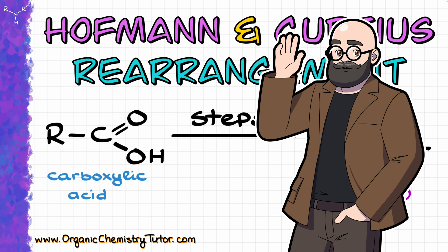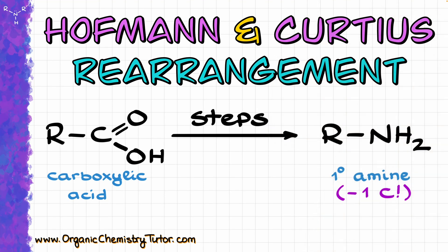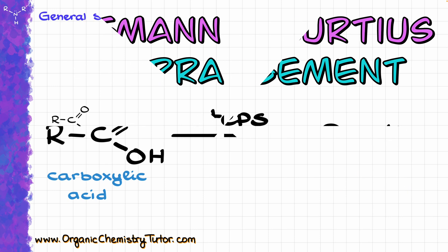Hey everyone, Victor here, your organic chemistry tutor. In this video I want to talk about Hofmann and Curtius rearrangements, which is a very old and yet useful method of taking carboxylic acids and converting them into primary amines, cutting one carbon off from our chain in the process.